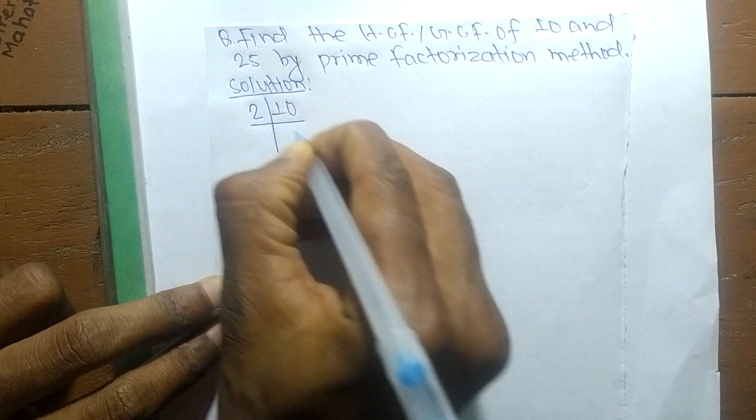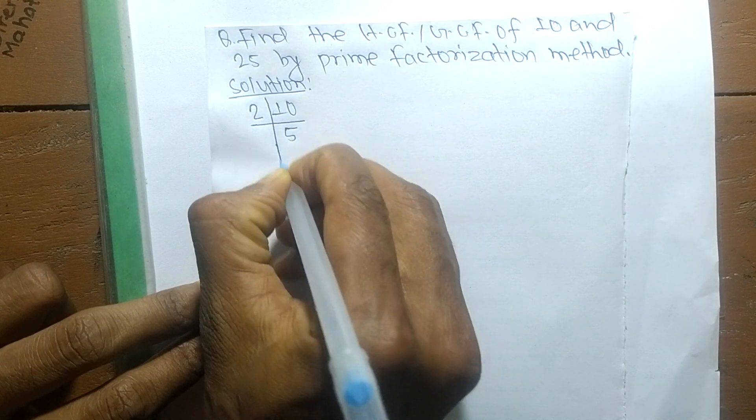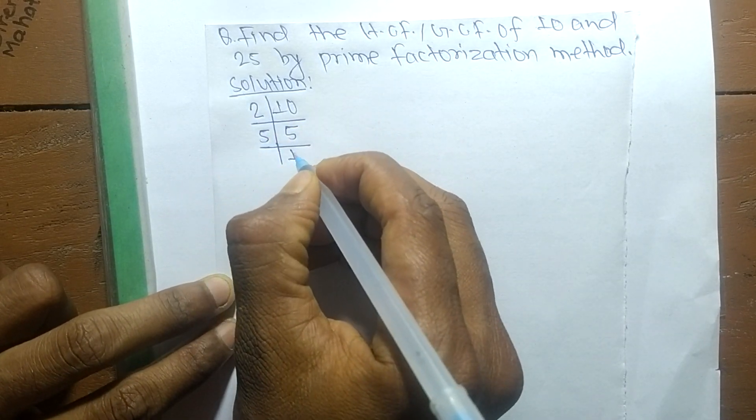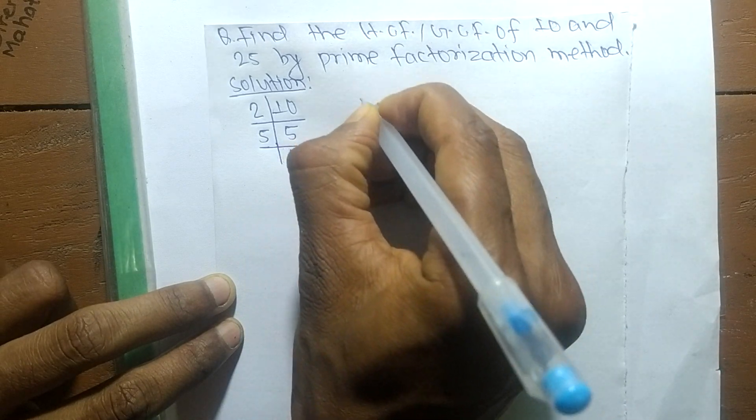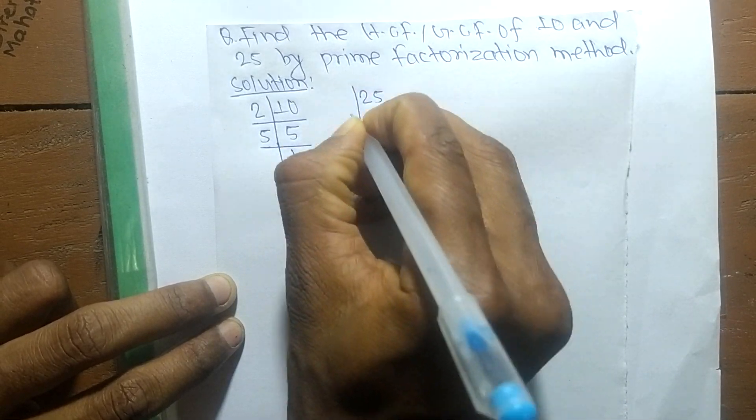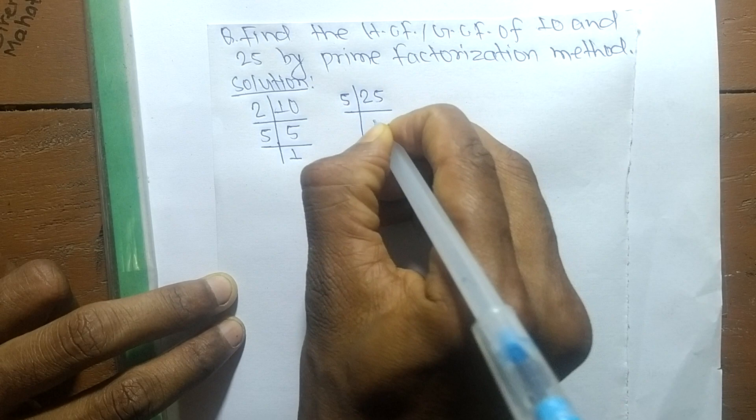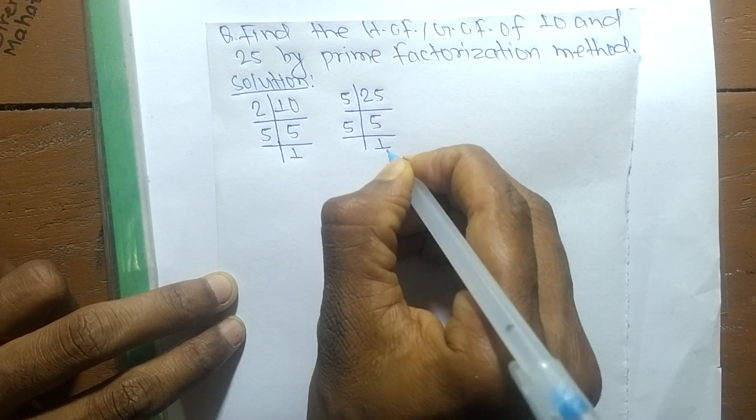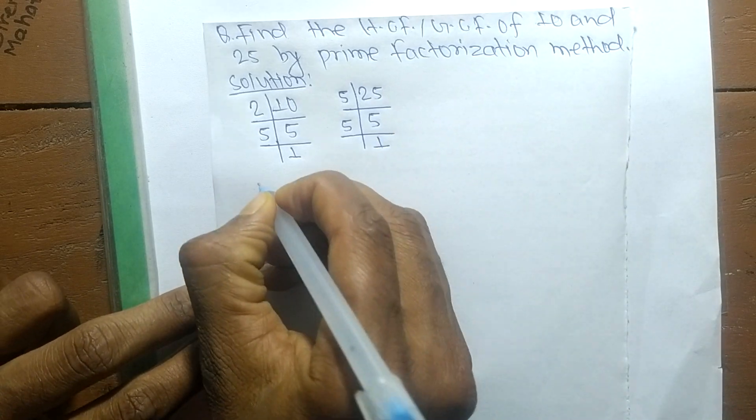The prime factors of 10 is 2 times 5, which equals 10, and 5 times 1 equals 5. The prime factors of 25 is 5 times 5, which equals 25, and 5 times 1 equals 5.